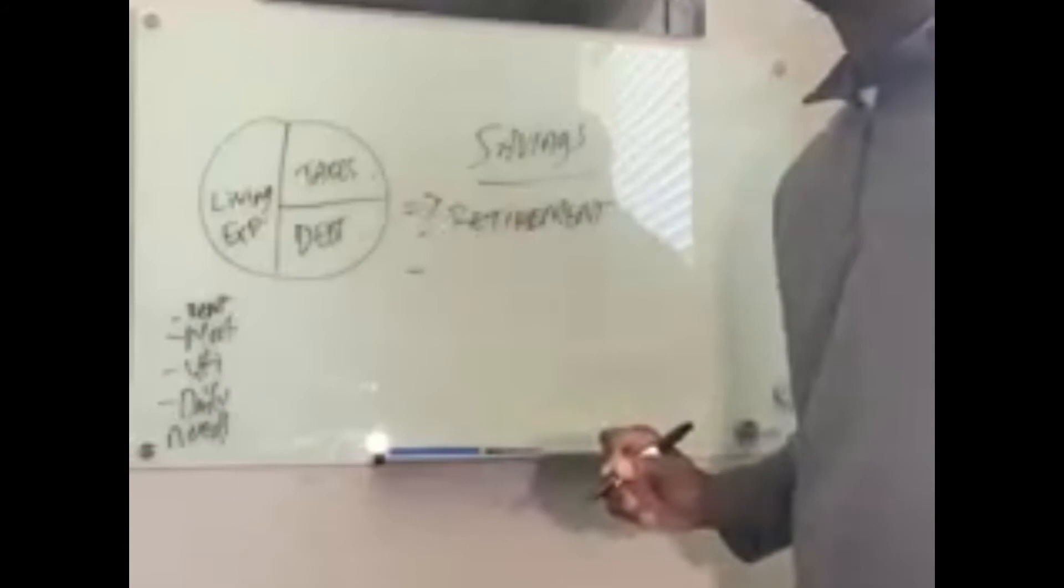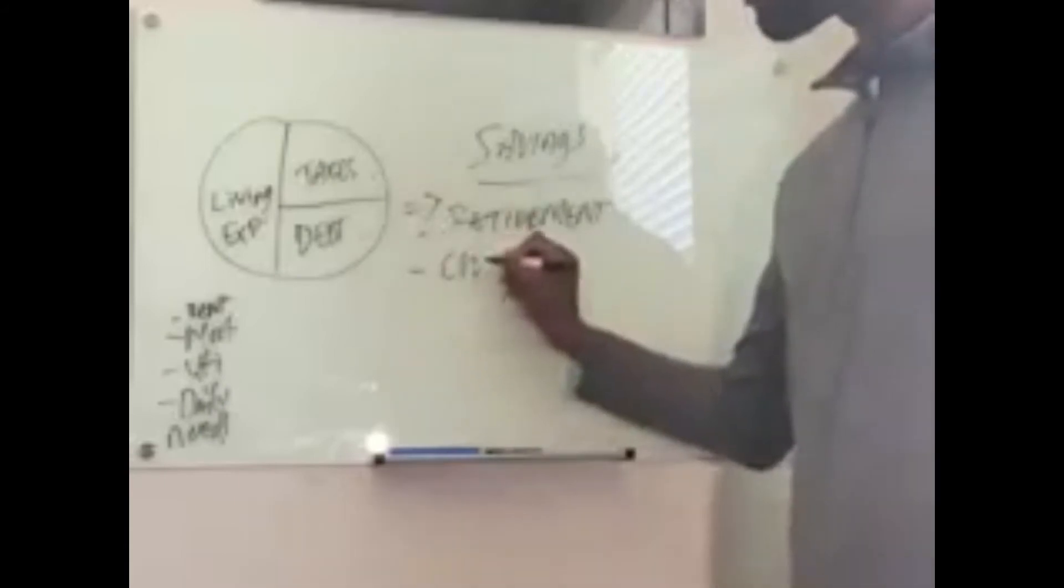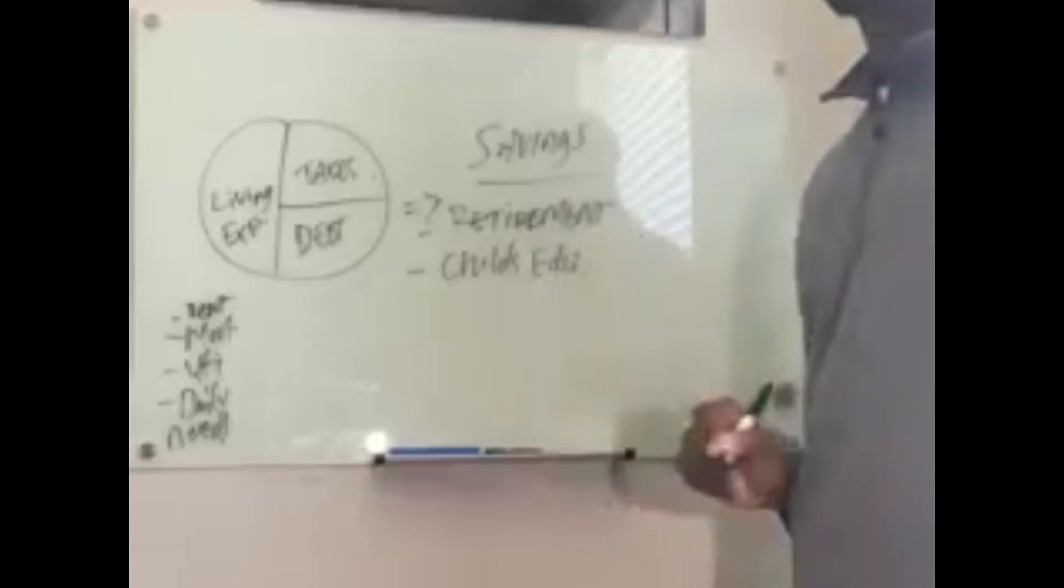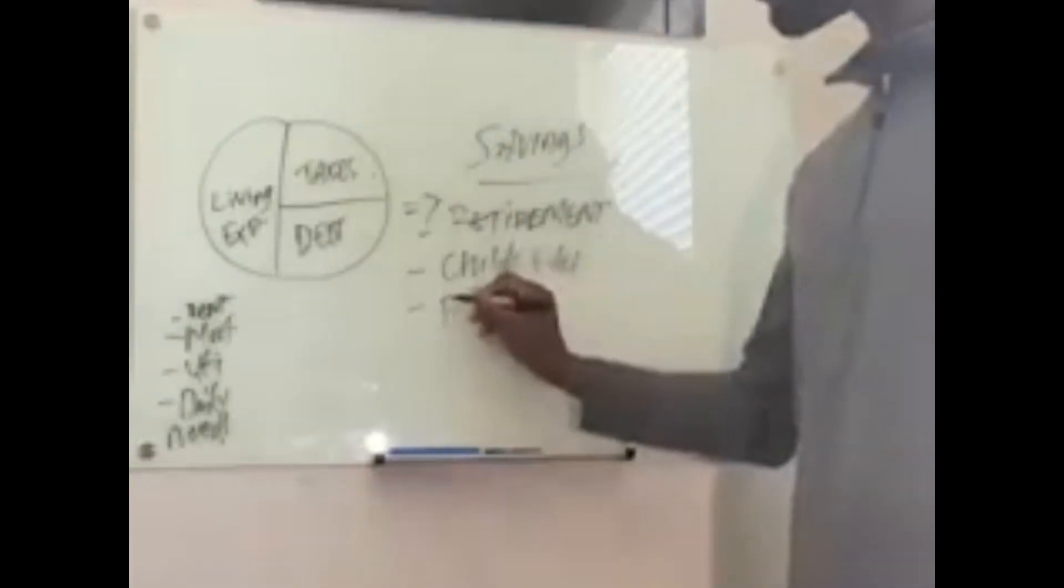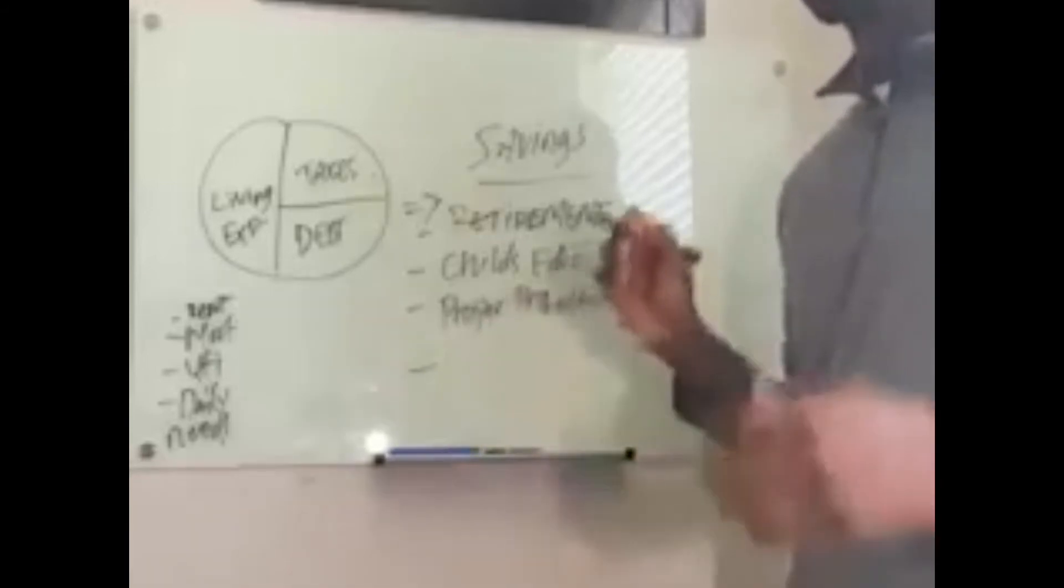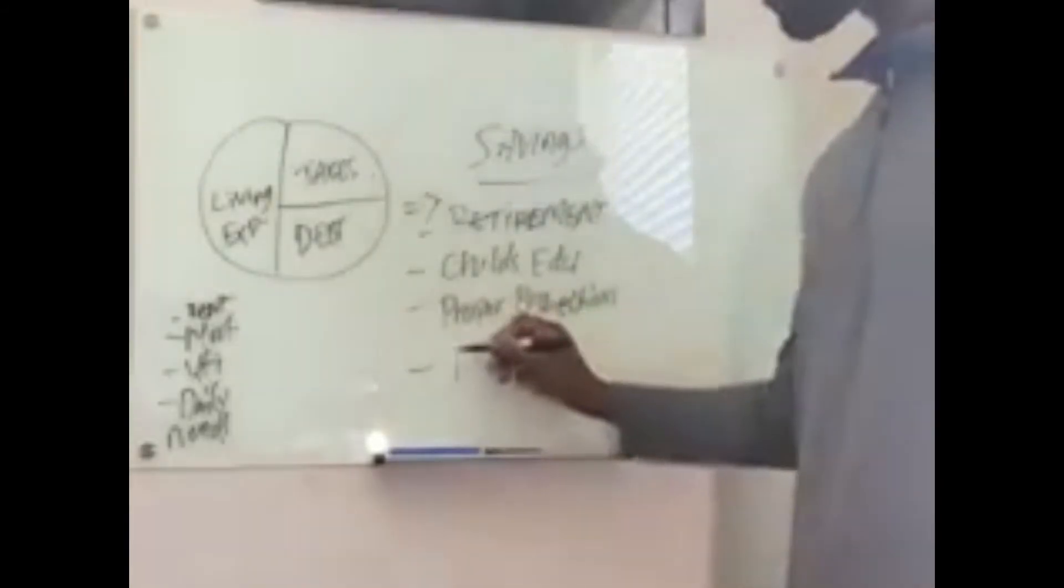Child education. Proper protection of assets. Protection. And of course, freedom of debt. Once we already get out, let's stay out.